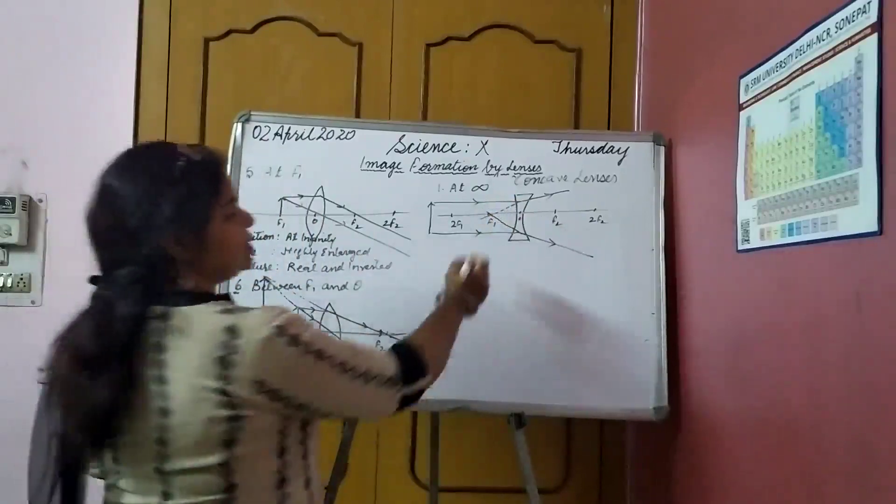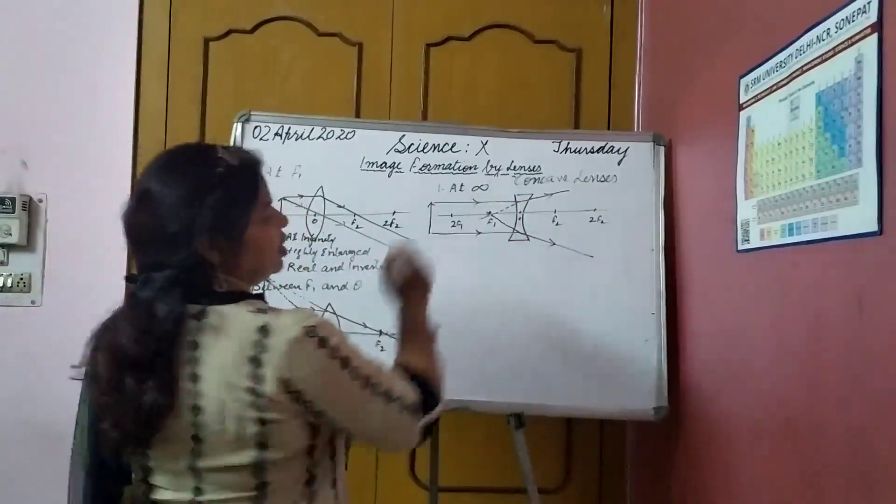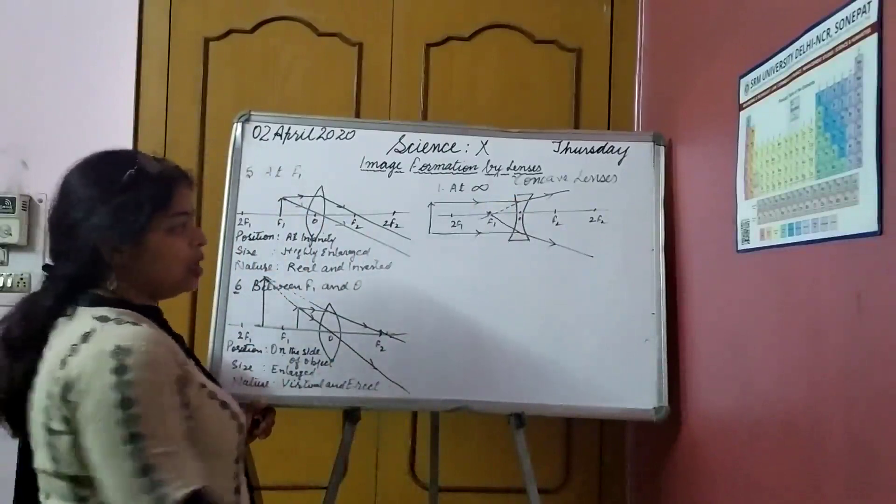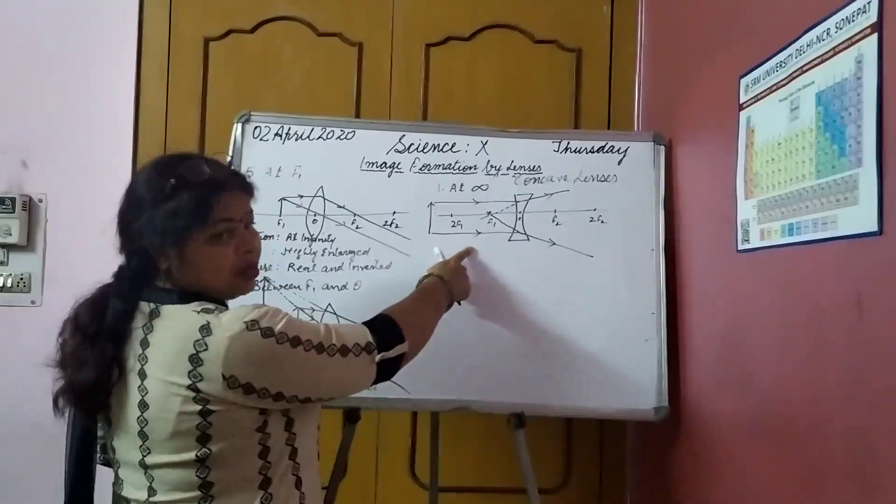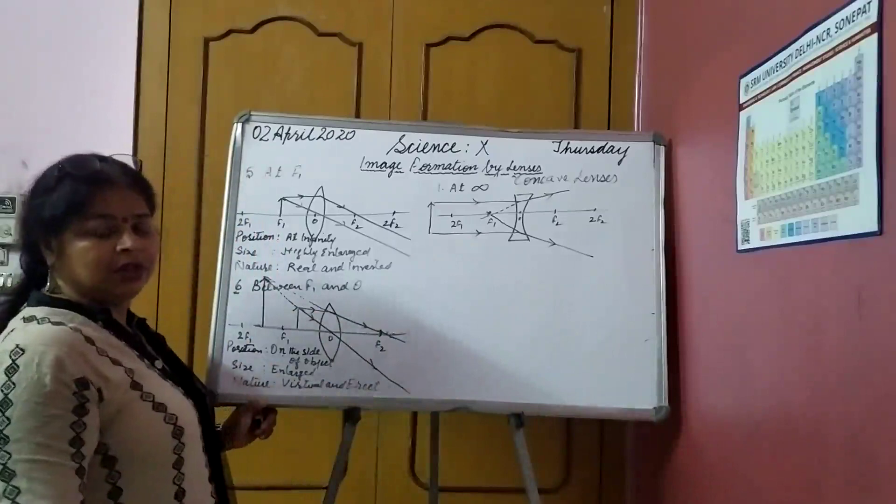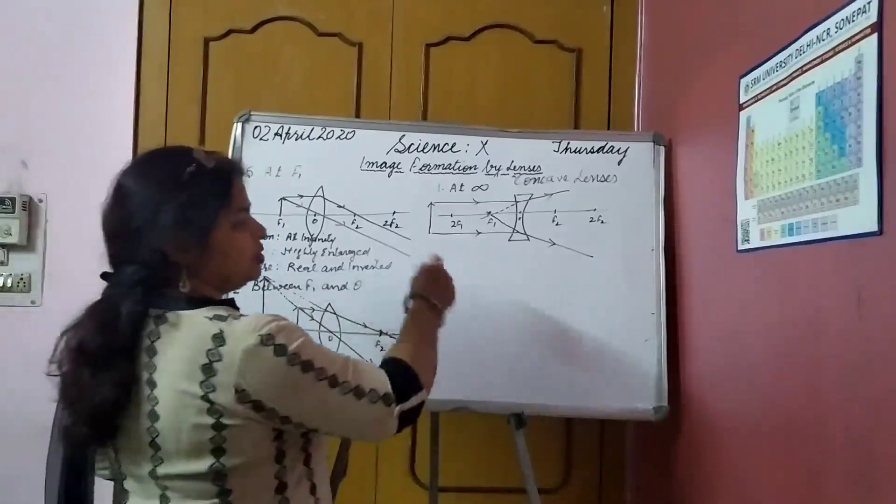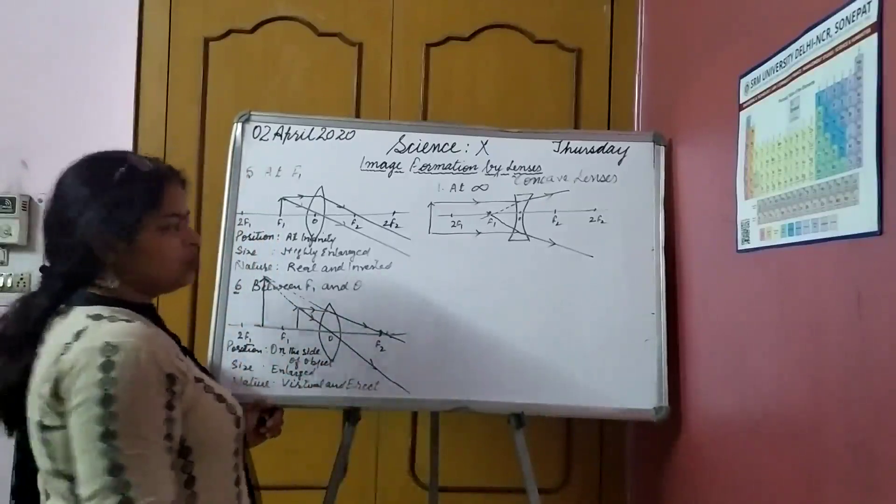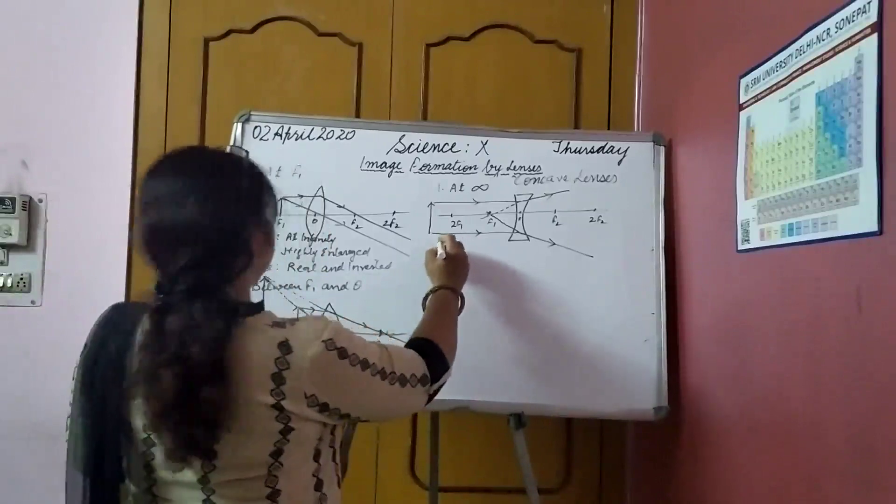Okay. So this is the point where the image is formed. And it is forming on the right side, on the left hand side of the lens, where the object is placed, on that side only. So, we will write here.